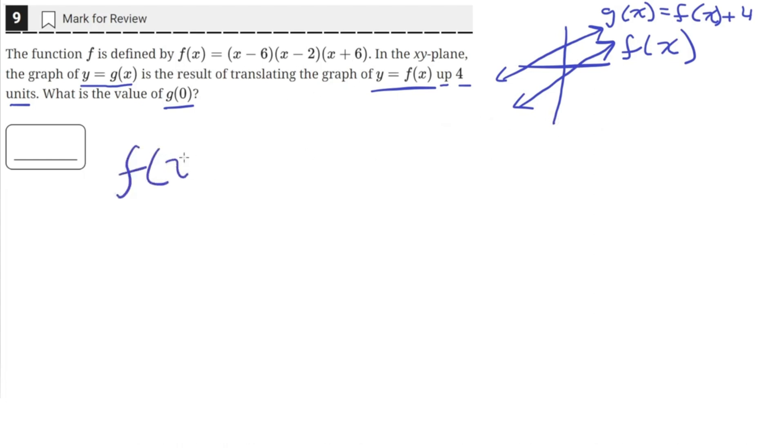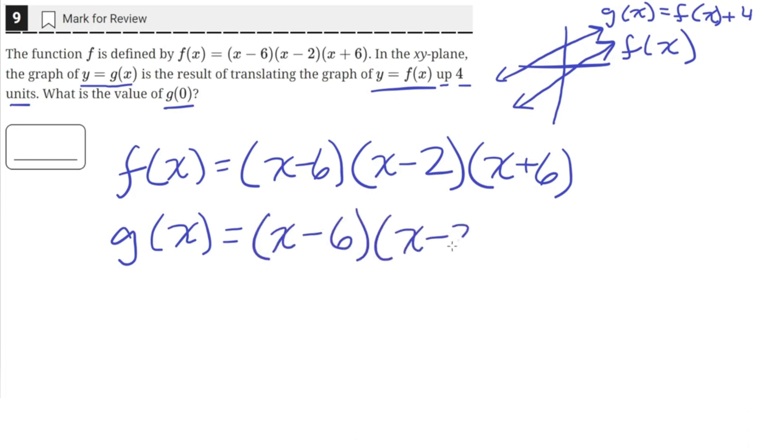So f(x) is equal to (x - 6)(x - 2)(x + 6). So then g(x) is just equal to f(x) plus 4. So g(x) is just (x - 6)(x - 2)(x + 6) plus 4.